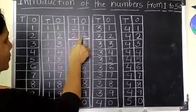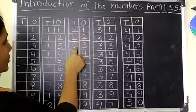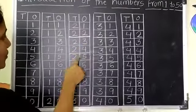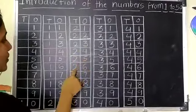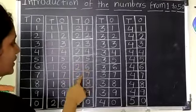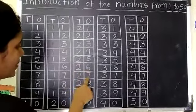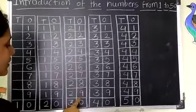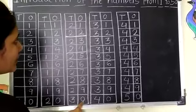2, 1, 21. 2, 2, 22. 2, 3, 23. 2, 4, 24. 2, 5, 25. 2, 6, 26. 2, 7, 27. 2, 8, 28. 2, 9, 29. 3, 0, 30.